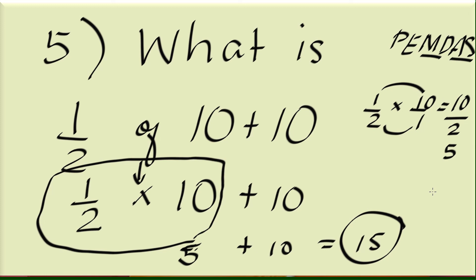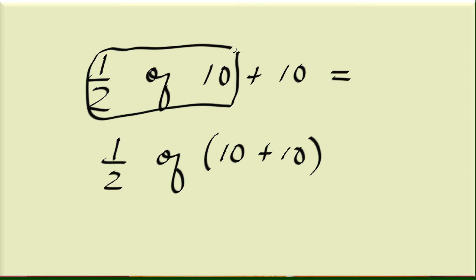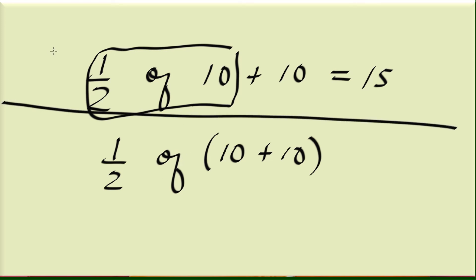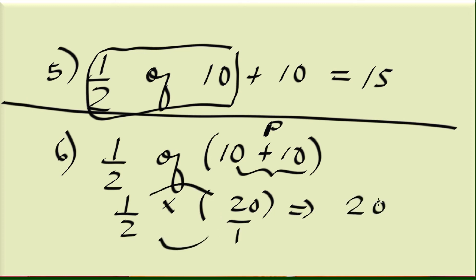Let me show you before we cut this video off. Instead of 1 half of 10 plus 10, I instead enclose the 10 plus 10 in parentheses — that's now example 6. What we did in example 5 was multiply 1 half times 10, which is 5, plus 10 equals 15. But now, if I enclose 10 and 10, that's the parenthesis in PEMDAS — the first top priority. So before you multiply, do 10 plus 10 which is 20. Then 1 half times 20 over 1 is 20 over 2, which is 10. I hope this helped — thanks so much for watching, I'll see you next time.